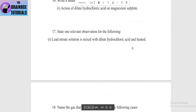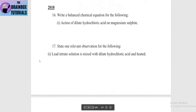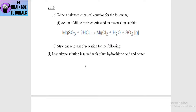2018 question: write a balanced chemical equation for the action of dilute hydrochloric acid on magnesium sulfite. The reaction: MgSO3 + 2HCl → MgCl2 + H2O + SO2 gas. If any metal sulfite reacts with HCl, sulfur dioxide gas is released.